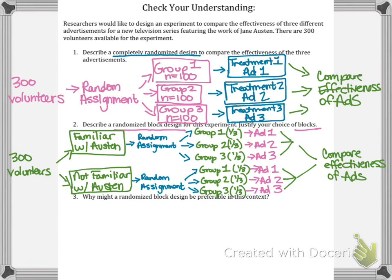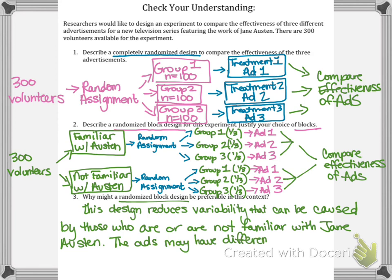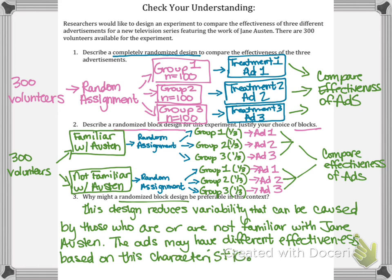The randomized block design is preferable here because it reduces variability caused by familiarity with Jane Austen — the ads may have different effectiveness based on that characteristic. Random assignment to groups, which then assigns treatments, remains important. The key takeaways for this lesson are knowing the difference between completely randomized design and randomized block design, and being able to identify a matched pairs design. Have a wonderful day!